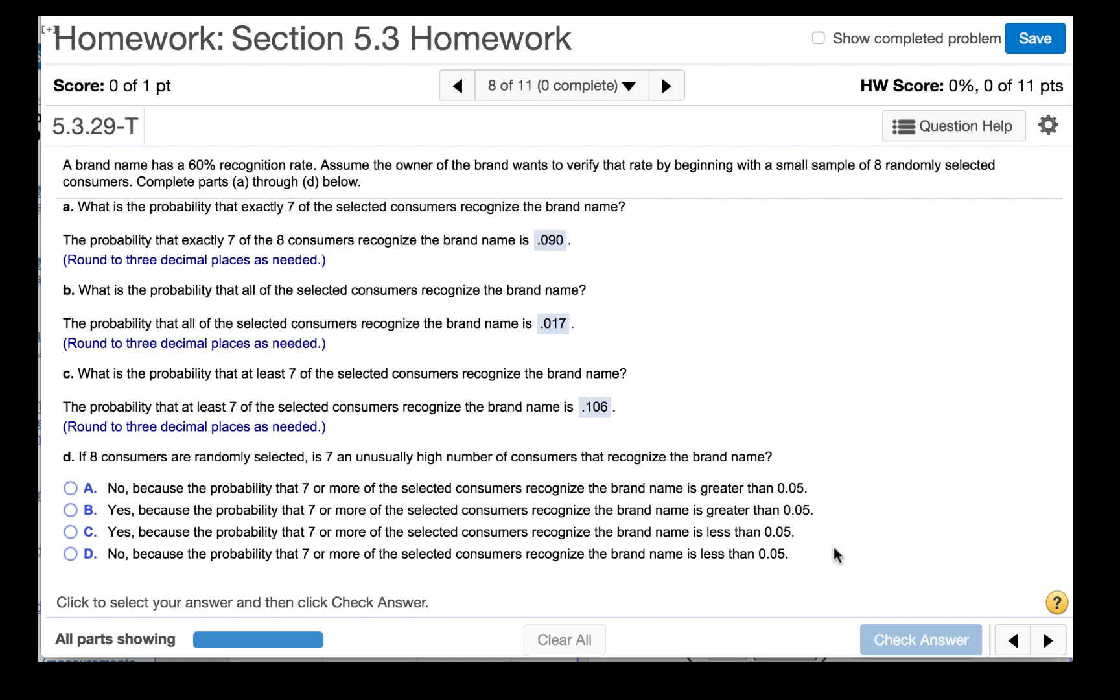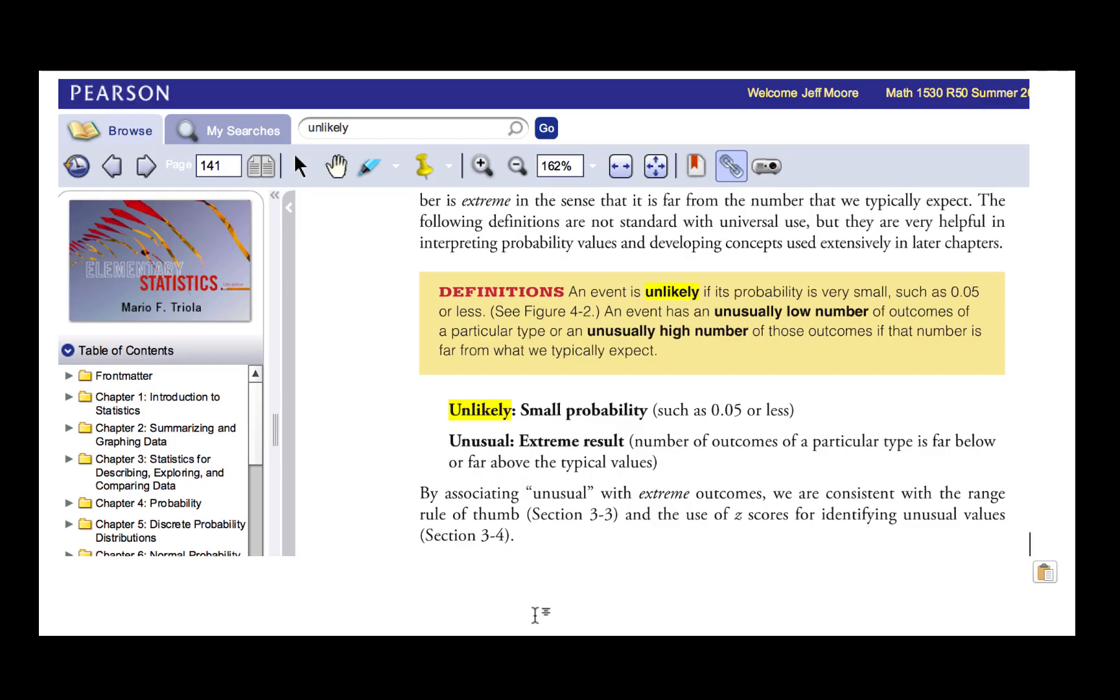Part D says, if 8 consumers are randomly selected, is 7 an unusually high number of consumers that recognize the brand name? On page 141 of the textbook, we find a definition. An event is unlikely if its probability is very small, such as 0.05 or less.